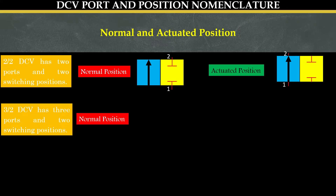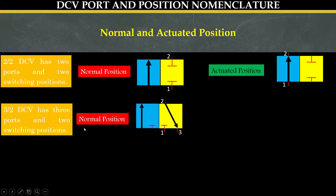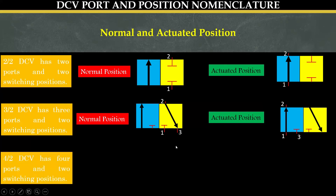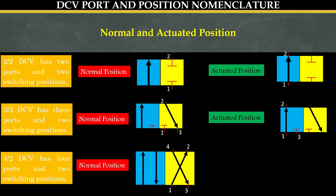Similarly, a three by two direction control valve which has three ports and two switching positions is represented in its normal position with the right hand side square displaying numbers one, two, three and lines extending from the ports. In the actuated position, the left hand side section of the valve will have lines extending from the port and numbers displayed. A four by two direction control valve which has four ports and two switching positions, in its normal position, allows fluid to flow from port one to port two and from port four to port three.